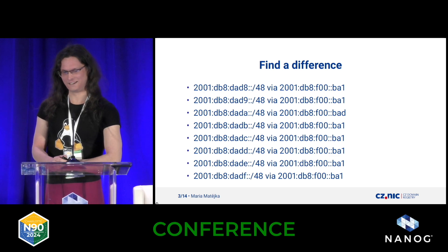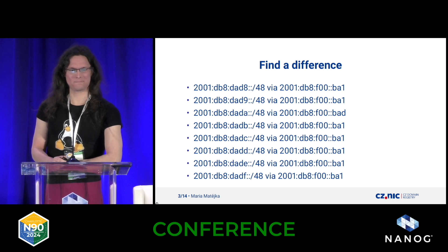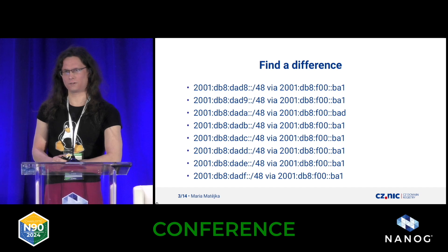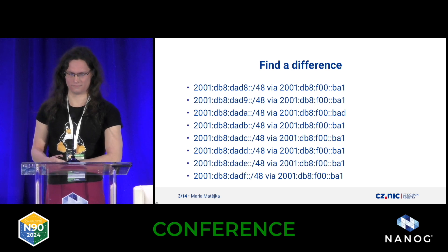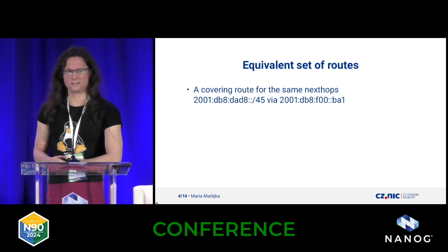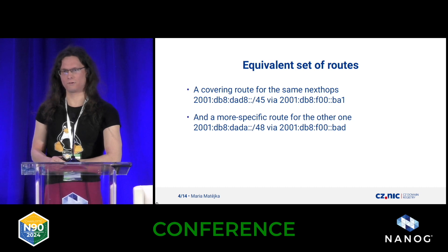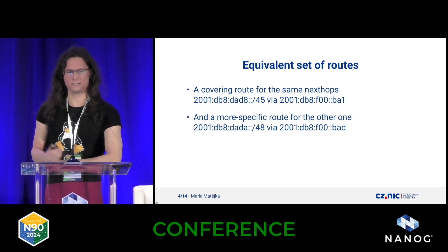Something a bit more complicated. You can probably see it — the third one has a different next hop, and all of those prefixes differ only in the last three bits. The first 45 bits are the same and the last three are differing, going from 0 to 7. We can cover this by one route for the common next hops and another route for that one prefix which is differing. We've reduced the number of prefixes: in the first case from 2 to 1, in this case from 8 to 2.